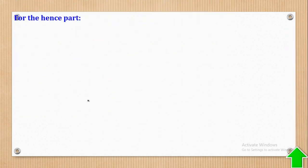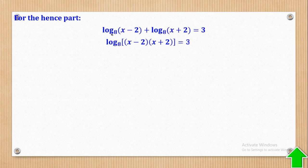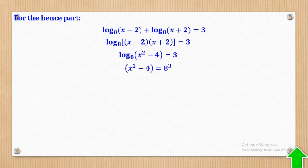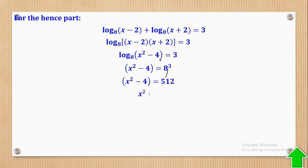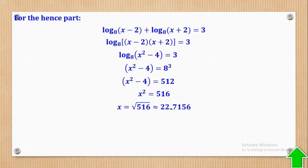For the hence part: applying the addition rule gives a product, and using the difference of two squares gives x squared minus 4. So 8 to power 3 equals x squared minus 4. Since 8 to power 3 equals 512, x squared equals 516. Taking the square root gives x approximately equal to 22.7156.